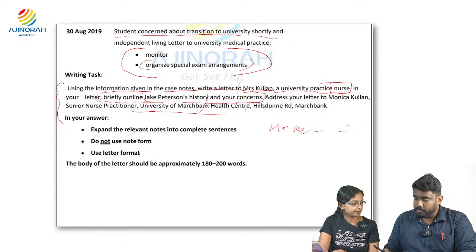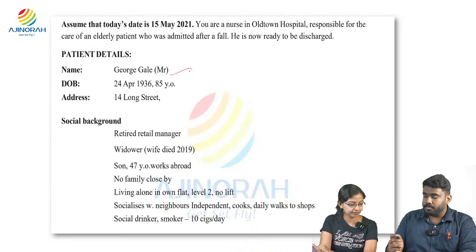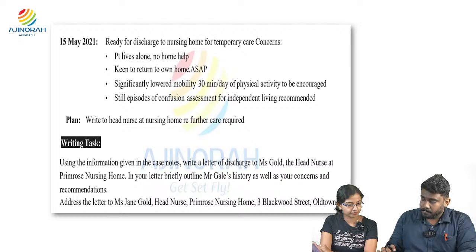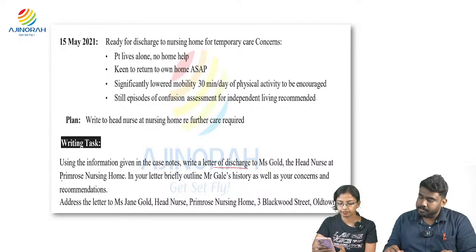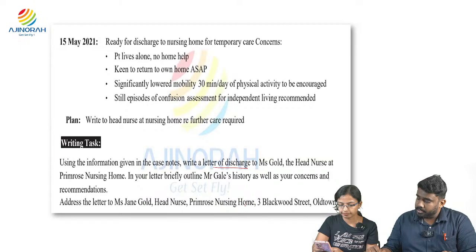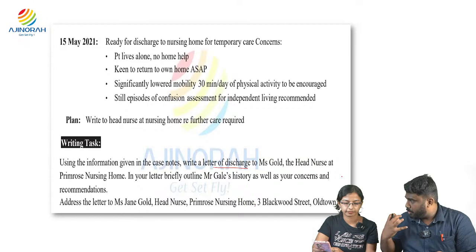Let us move to the next letter — the official letter of Mr. George Gail. We will go directly to the writing task. The writing task states: 'Using the information given in the case notes, write a letter of discharge to Miss Gold, the head nurse at Prime Ross Nursing Home. In your letter, briefly outline Mr. Gail's history as well as your concerns and recommendation. Address the letter to Miss Jane Gold, Head Nurse, Frame Rose Nursing Home, Blackwood Street, Old Town.'